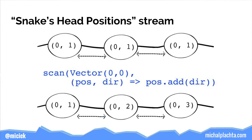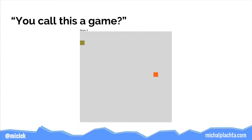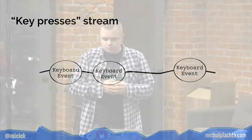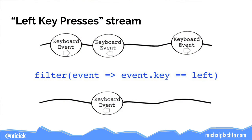Vector (0, 1) means we always go down, and this isn't really a game because there is no input. So let's change it by introducing a new stream: the key presses stream. Each time the user presses a button on the keyboard, there is an object in the stream holding a keyboard event. We can filter it to create a left key presses stream.